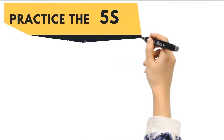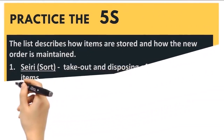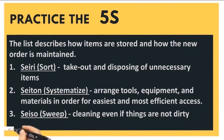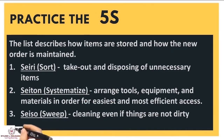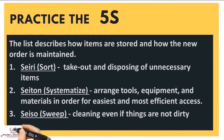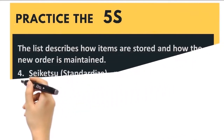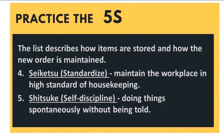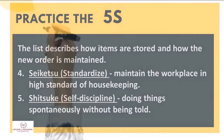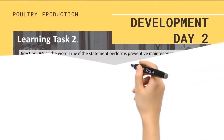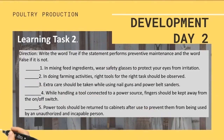Number eleven — keep tools in their proper places and always practice the 5S. Number one — Sort: take out and dispose of unnecessary items. Number two — Systematize: arrange tools, equipment, and materials in order for easiest and most efficient access. Number three — Sweep: clean even if things are not dirty. Number four — Standardize: maintain the workplace in a high standard of housekeeping. Number five — Self-discipline: doing things spontaneously without being told.